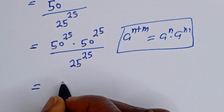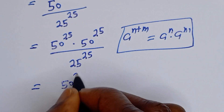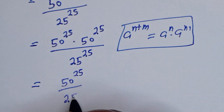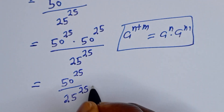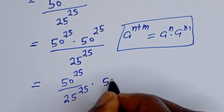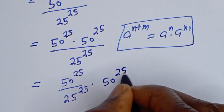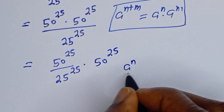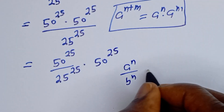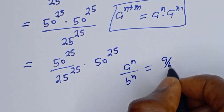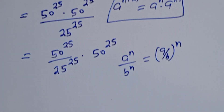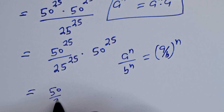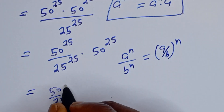Then this is equal to 50 to the power of 25 divided by 25 to the power of 25, multiplied by 50 to the power of 25. If you have a to the power of n over b to the power of n, this is equal to a over b, to the power of n. So here we get 50 over 25, to the power of 25, multiplied by 50 to the power of 25.